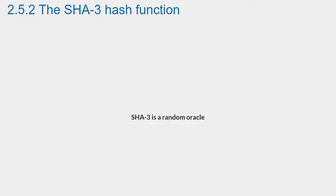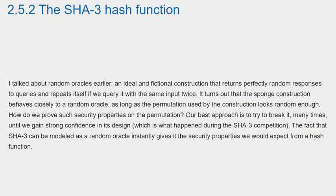SHA-3 is a random oracle. A random oracle is an ideal and fictional construction that returns perfectly random responses to queries and repeats itself if queried with the same input twice. It turns out that the sponge construction behaves closely to a random oracle, as long as the permutation used by the construction looks random enough. How do we prove such security properties on the permutation? Our best approach is to try and break it many times until we gain strong confidence in its design, which is what happened during the SHA-3 competition. The fact that SHA-3 can be modeled as a random oracle instantly gives it the security properties we would expect from a hash function.